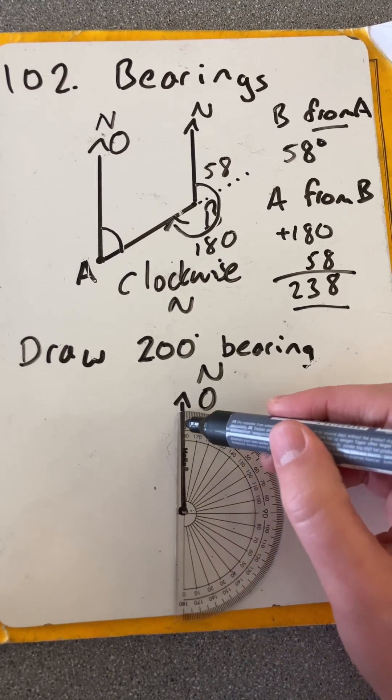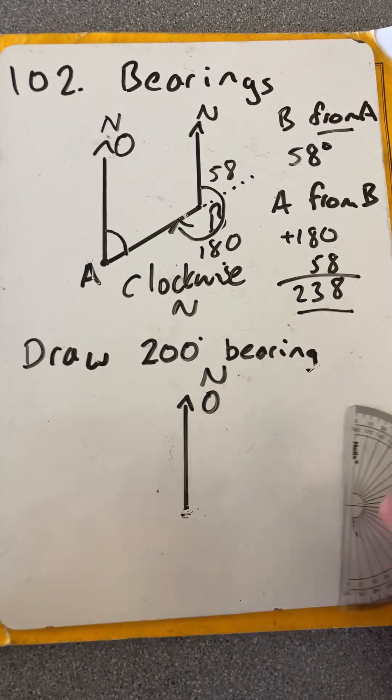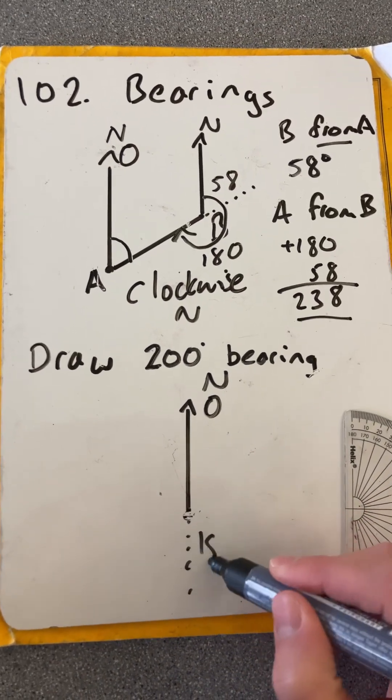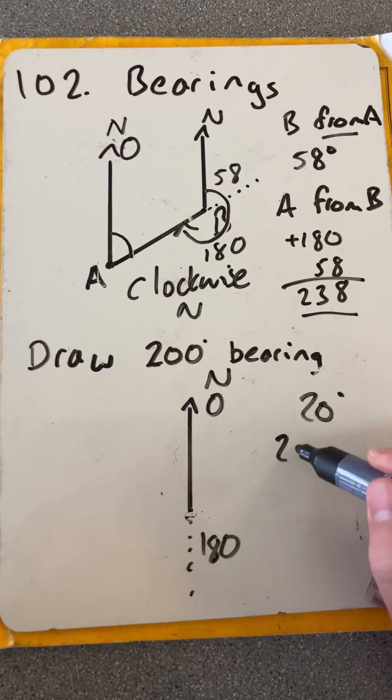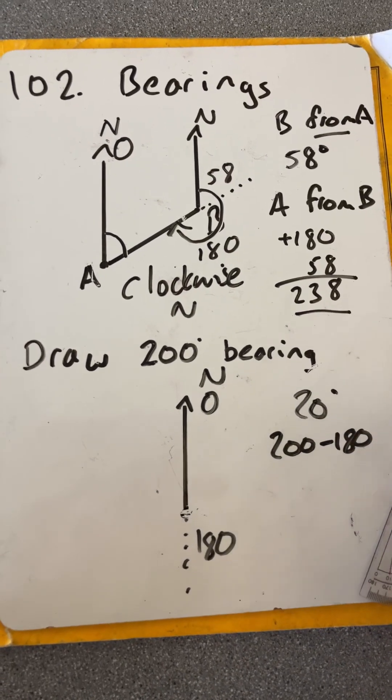So if we have our protractor there with the cross there, always reading from zero, so this time it's on the outside. We know all the way around will be 180. So what we need to do is add an extra 20 degrees, because that's 200 minus 180. That's the difference there.